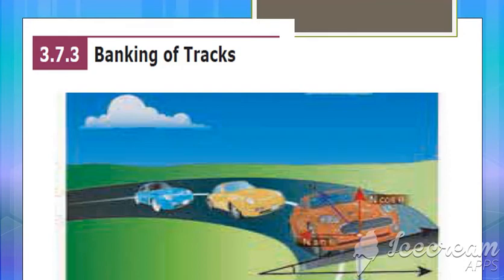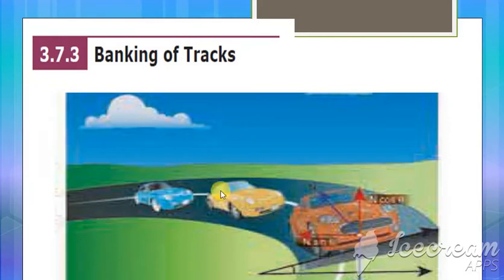Next, we are going to see what is banking of tracks. This gives a necessary condition on what speed the vehicle has to move so that there will not be any skidding. When you see here, this car is moving in the circular path.